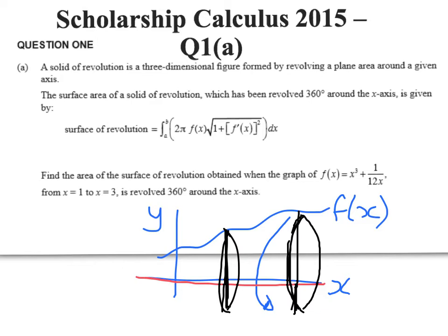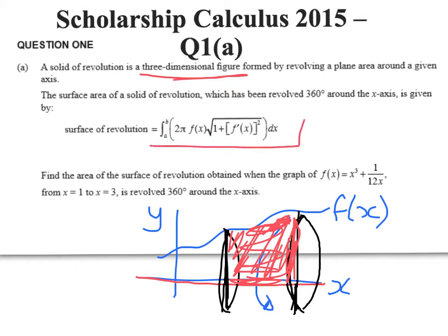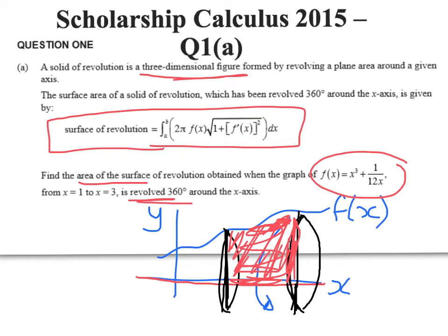We can do two things with that. We can find the volume really easily, and we can find the surface area. This question is about the surface area of a solid of revolution. A solid of revolution is a 3D figure formed by revolving a plane area around a given axis. The surface area can be found with this formula here. We're asked to find the area of the surface of revolution obtained when the graph of this function is rotated 360 degrees around the x-axis with these limits of integration. So this question is just about applying an unknown formula to a problem. My limits are going to be b and a, my function is substituted here, and its derivative here. So have a go at that now, and I'll work through it on the next slide.